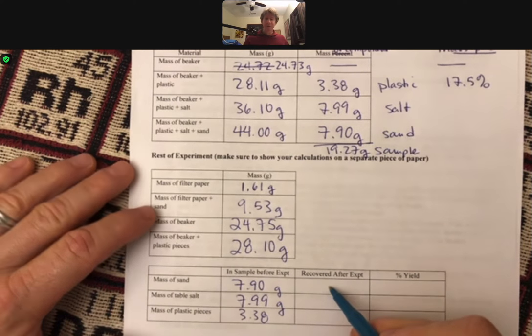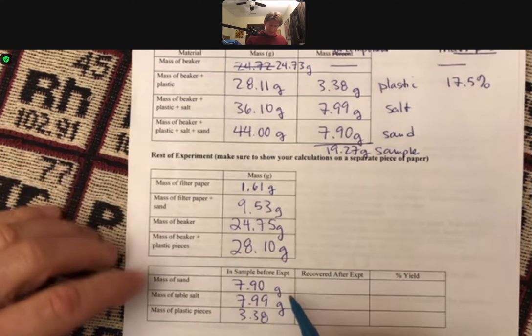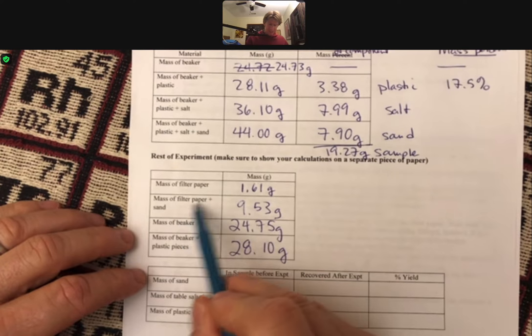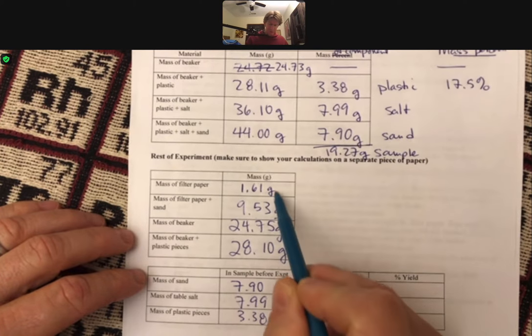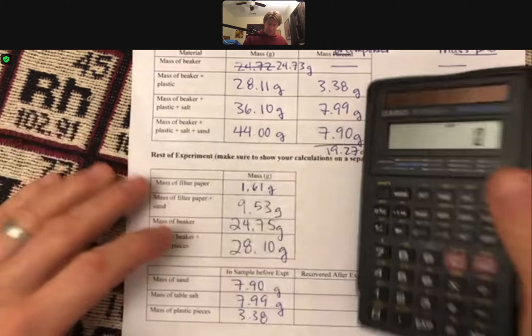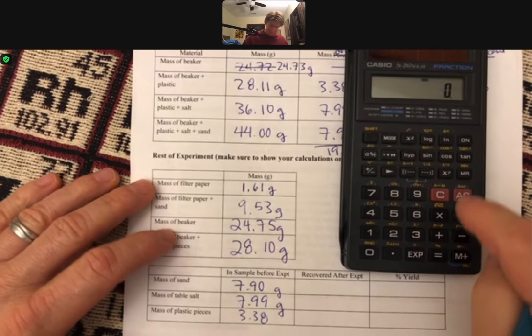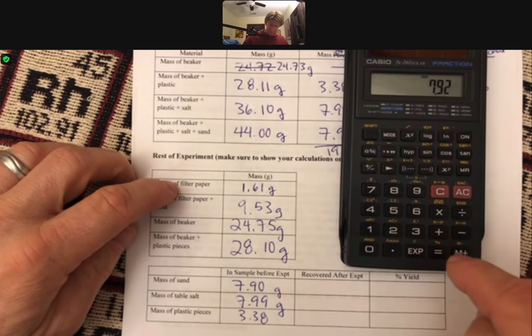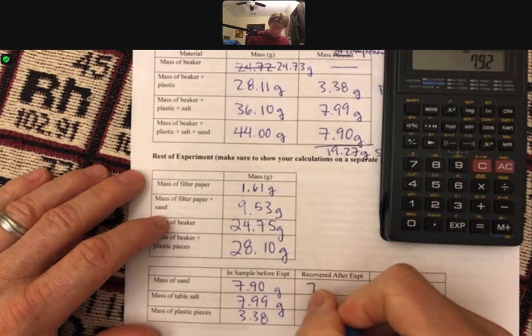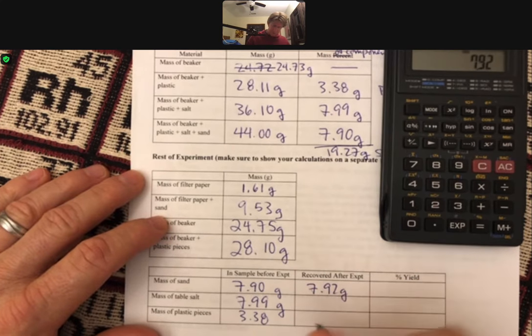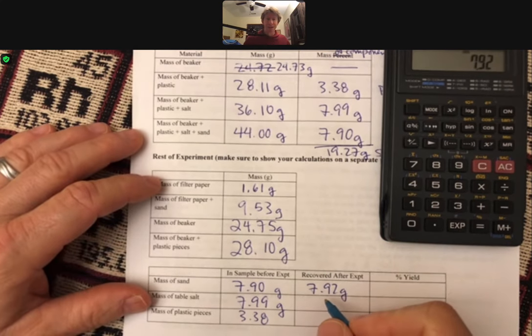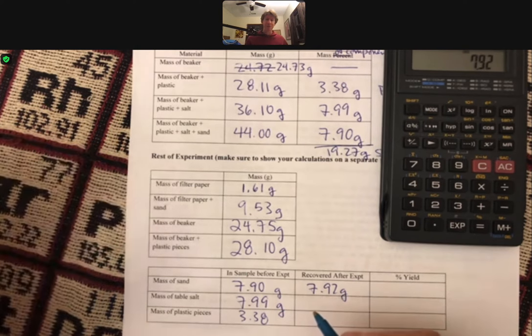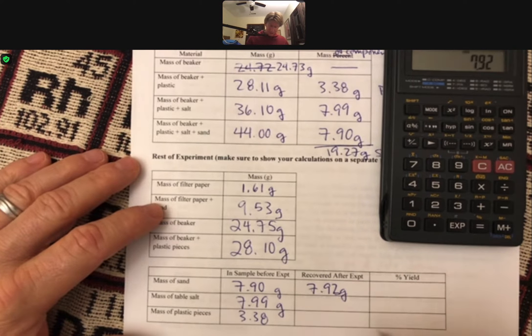Recovered after experiment. Well, my sand after the experiment is going to be filter paper plus sand minus filter paper. So I'm going to subtract these two numbers. 7.92 grams. So pretty close. I actually, it looks like I got more, which is physically impossible. So there must be an error in there.